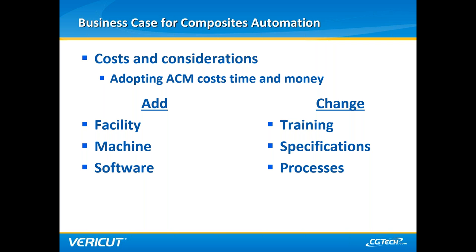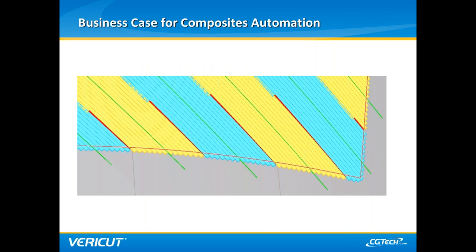In addition, software must be obtained to program and control the machine and any supporting systems. Changes must be made to personnel and across organizational lines. Transitioning to ACM requires a fundamental shift in part design supported by experienced leadership. Flow down to the rest of the organization requires personnel training, specification modification, and altered processes. Engineering, manufacturing, design, quality, and operations groups will all be affected. An example of how manufacturing specifications must be adapted is the convergence zone — an area of the laminate with enough contour that it causes courses to converge.